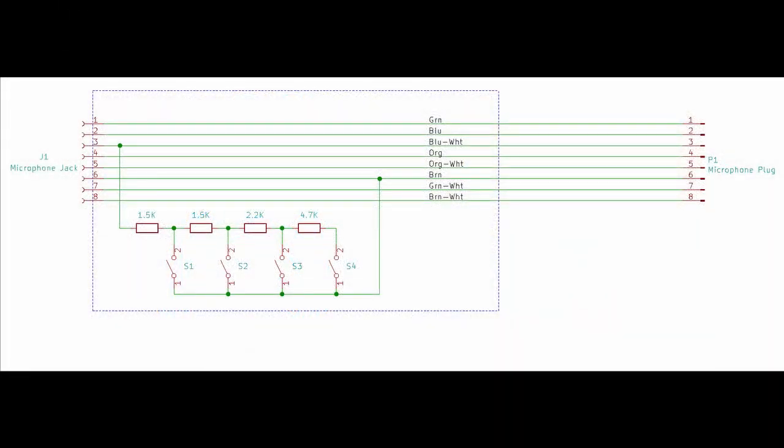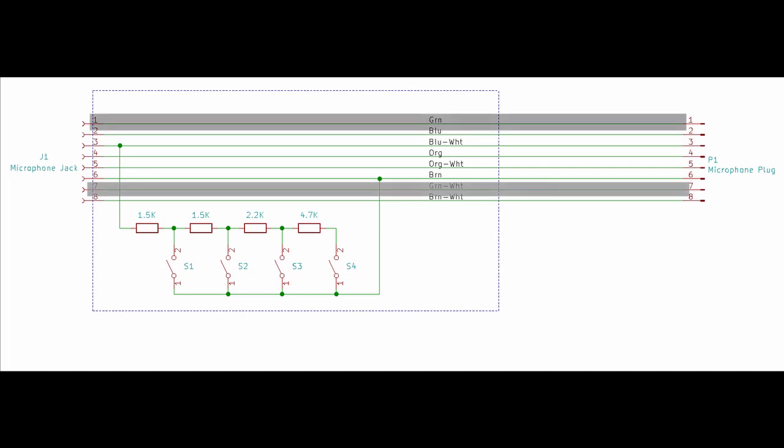I drew my own separate schematic for the box because I wanted to keep track of all the wires going from the plug to the jack. I especially wanted to make sure that the mic audio and ground wires were on their own twisted pair. The mic audio and ground are on pins 1 and 7 respectively. I used the green and green and white twisted pair for those two pins.